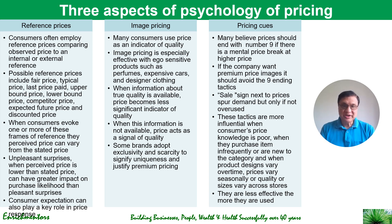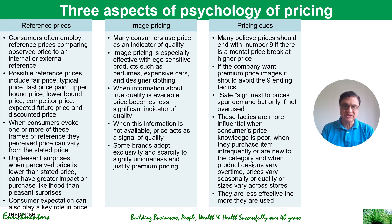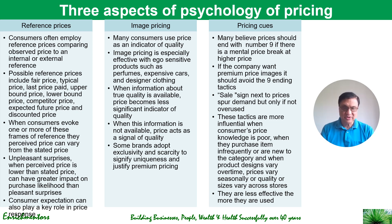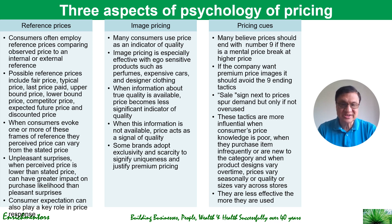Image pricing refers to price being used as an indicator of quality, especially in categories that are ego-sensitive such as perfumes, expensive cars, and designer clothing, and also when information about true quality is not available. When true quality information is available, price becomes a less significant quality signal. Some brands adopt exclusivity with scarcity to signify uniqueness and justify a premium price — for example, Louis Vuitton creates exclusivity and scarcity to maintain premium pricing.